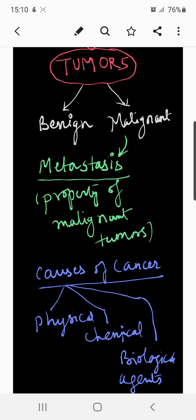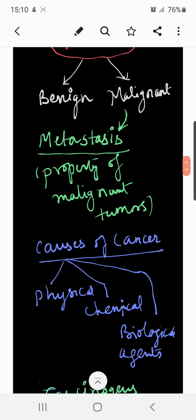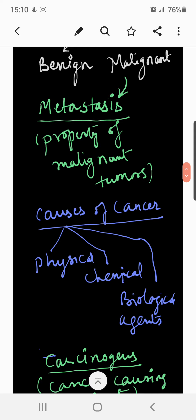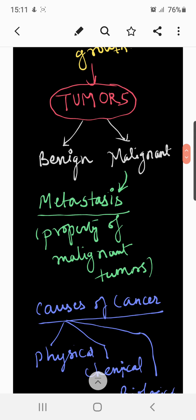Still later, the tumor extends to neighboring tissues like the roots of a tree. At the last stage, bits of tumor tissue break off and are carried by circulating blood or lymph to other parts of the body, where they invade new tissues. This process is known as metastasis. It is observed only in malignant tumors and is the property that distinguishes malignant tumors from benign ones.